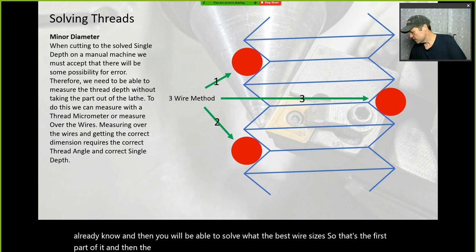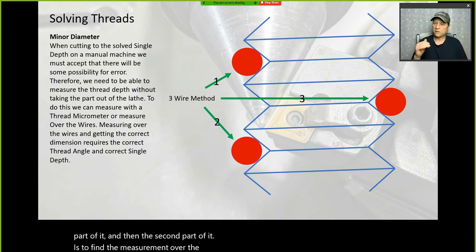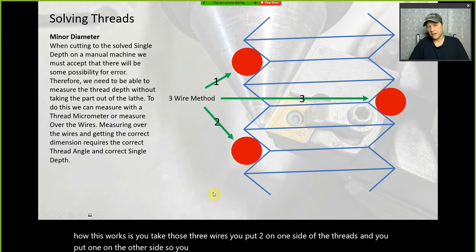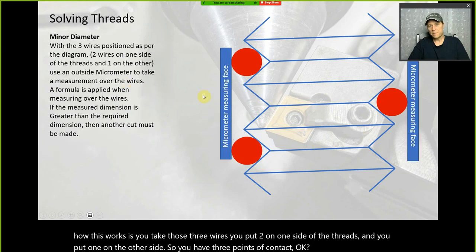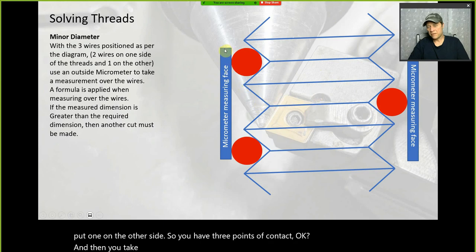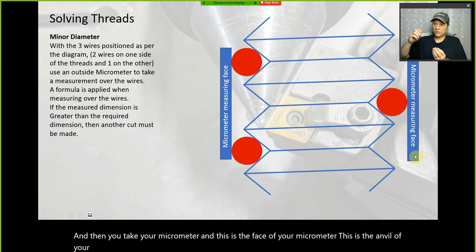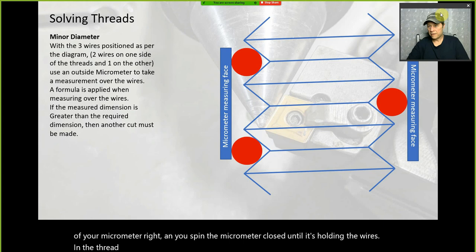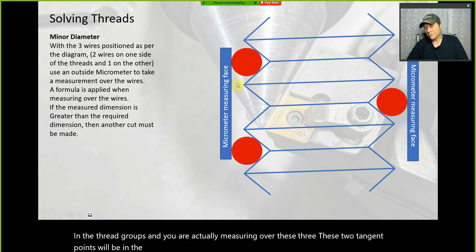How this works: you take those three wires, put two on one side of the threads and one on the other side, giving you three points of contact. Then you take your micrometer — the face is the anvil — and spin it closed until it holds the wires in the thread grooves, measuring over these three tangent points.